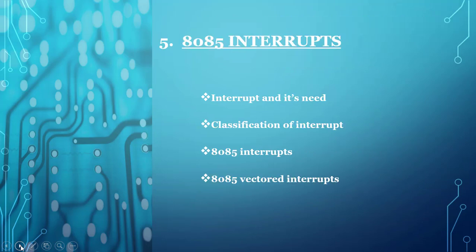The fifth unit is 8085 Interrupts. Any microprocessor-based system consists of a microprocessor connected with a number of I/O devices. To allow communication between the microprocessor and these input-output devices, we either use polling or interrupt methods. The 8085 supports both software as well as hardware interrupts. This unit will cover everything in detail: interrupts and their needs, classification, 8085 interrupts, and 8085 vector interrupts.